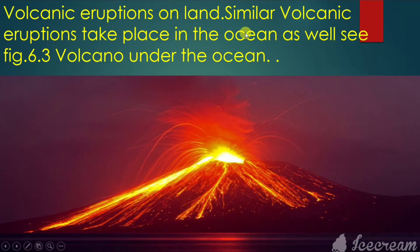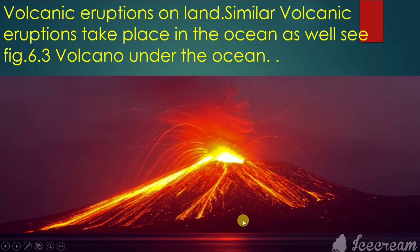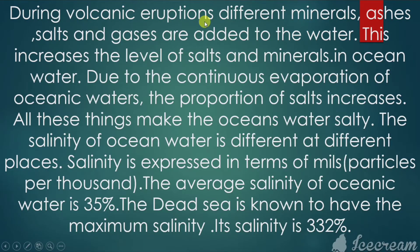Volcanic eruptions on land and similarly volcanic eruptions take place in the oceans as well — volcanic activity under the ocean, as shown in figure 6.3. During volcanic eruptions, different minerals, ashes, salts, and gases are added to the water. This increases the level of salts and minerals in ocean water.